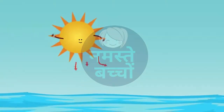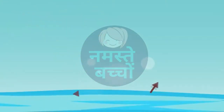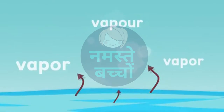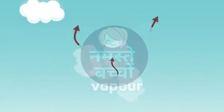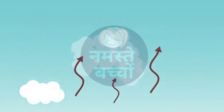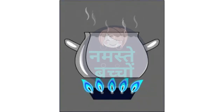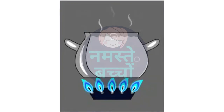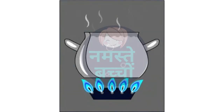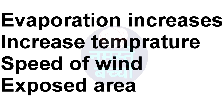As the sun heats water in a puddle, the puddle slowly shrinks. Similarly, as water in a puddle boils, the level of water falls. Evaporation increases with the increase in temperature, speed of wind, and exposed area.